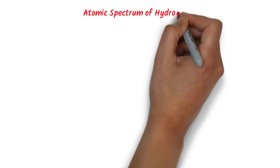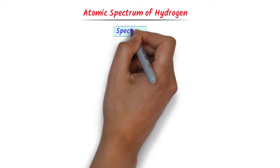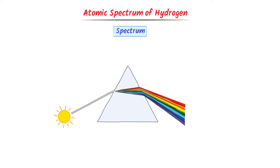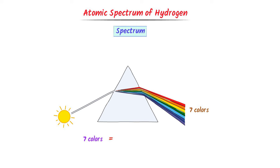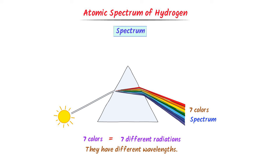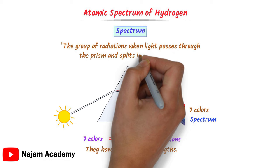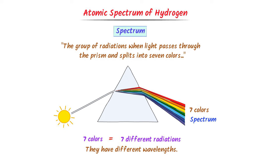We will learn some key concepts like spectrum. Consider sunlight — when we pass sunlight through a prism, different wavelengths bend at different angles, giving us seven different colors. These different colors represent different radiations or different wavelengths. We call this group of radiations or wavelengths a spectrum. Spectrum is defined as the group of radiations when light passes through a prism and splits into seven colors.